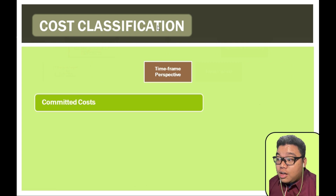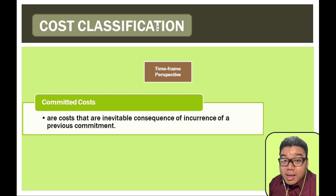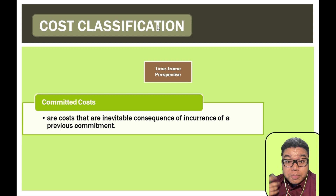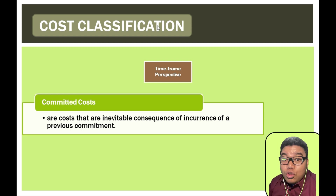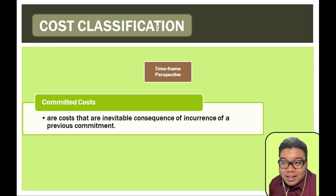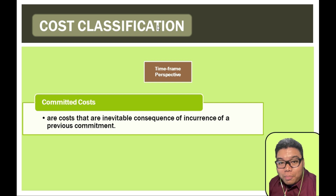Cost classifications on a time frame perspective: a committed cost means you already have an agreement regarding the incurrence of that cost. For example, with an option contract you promise to pay after 30 days, and when that period lapses you must pay. Another example is a two-year lease contract at 10,000 per month — you are committed to paying that amount each month.